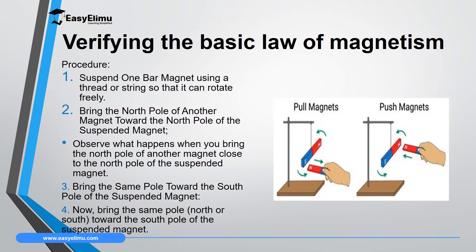To verify the basic law of magnetism — that like poles repel while unlike poles attract — you need a thread, a clamp, boss and stand, two magnets, and yourself. You suspend one bar magnet using a thread so that it can rotate and swing freely, as shown in the diagram on screen.